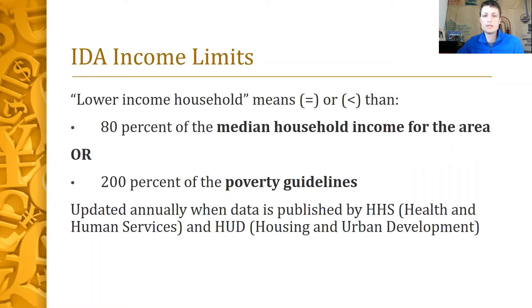NPA-NP updates income charts by county each spring when HUD and HHS release updated numbers, usually sometime in April. The income limits are then built into the income calculator by county and a new income calculator is sent out. If an applicant is over income one year but qualifies after new limits are updated, you just need to make sure they requalify with an application date and income verification that happens after the income numbers were updated.